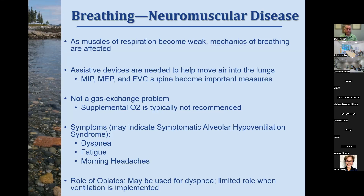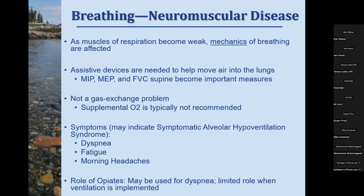For breathing with neuromuscular disease, it's more about the mechanics of breathing than gas exchange. We focus on devices to help move air in and out of the lungs, which is why we monitor MIP, MEP, and FVC closely. Symptoms suggesting breathing issues include dyspnea, fatigue, and morning headaches. Opiates can play a role for dyspnea, but many patients do well with non-invasive ventilation. Some patients prefer non-invasive ventilation over opiates to preserve cognition and maintain better interaction with family for longer periods.